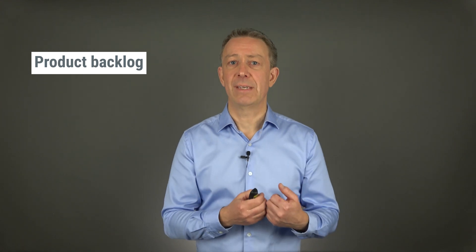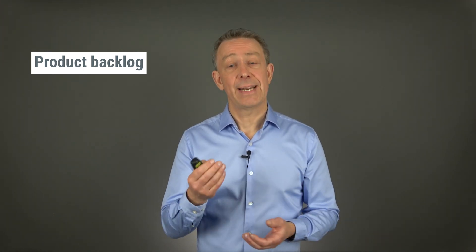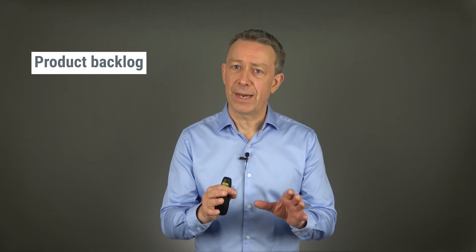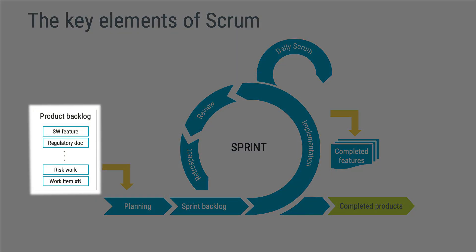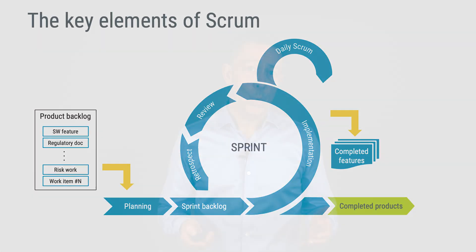The product backlog is the single source of input to the development team and is typically maintained by a product owner. It is prioritized, meaning that the top work items are most desired. Note that I'm intentionally saying work items and not requirements, because many other tasks could be overlooked if you only use the product backlog for requirements. For instance, the regulatory department might need help preparing specific technical documentation for a new region, or the software architecture might need to be worked on.